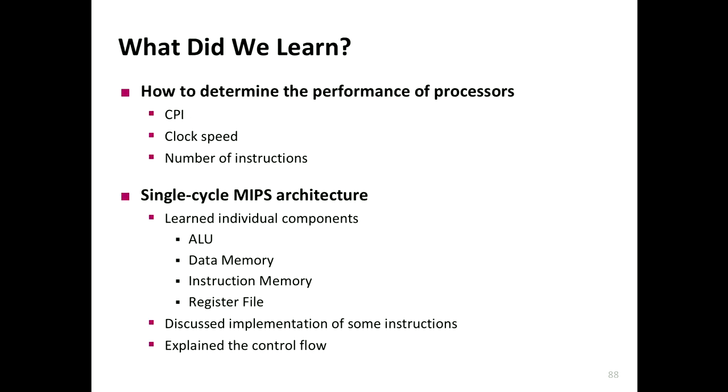To summarize: we learned how to determine processor performance — CPI, clock speed based on the critical path, and execution time. We incrementally built the single-cycle MIPS architecture starting from load word, then store word, R-type instructions, branch equal, jump, and add immediate. We now have a functional single-cycle MIPS processor. From next time the lectures will cover multi-cycle and pipelined architectures.